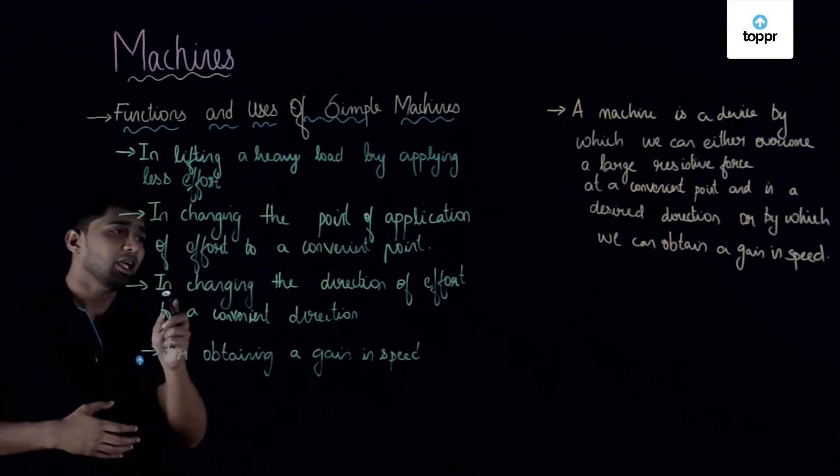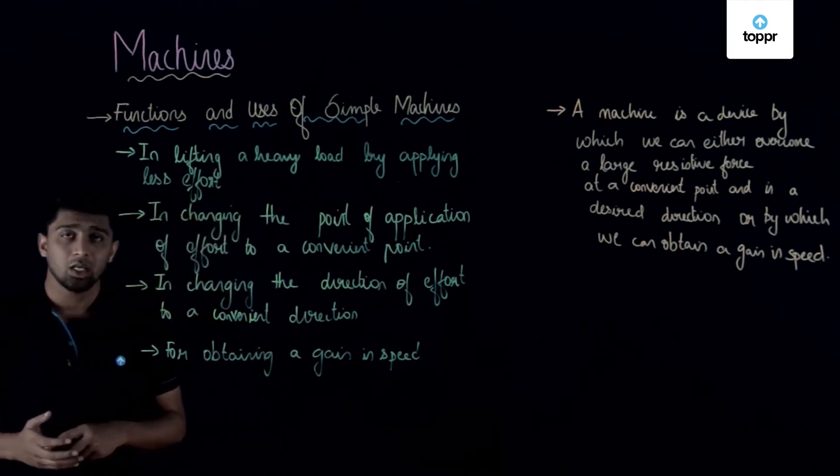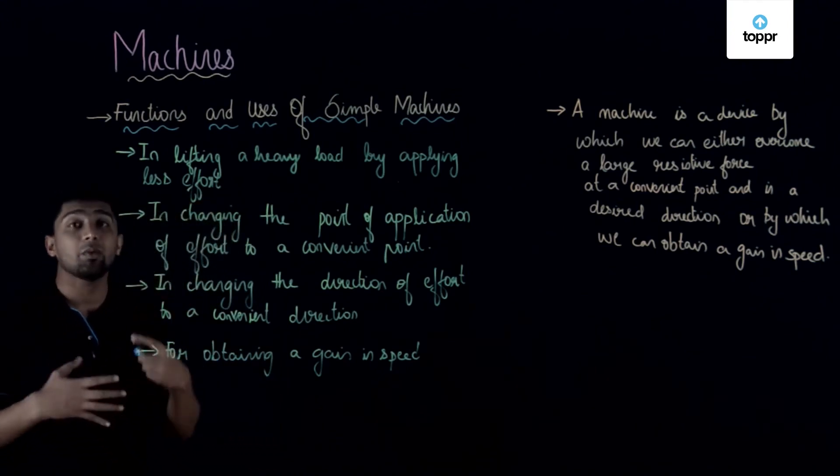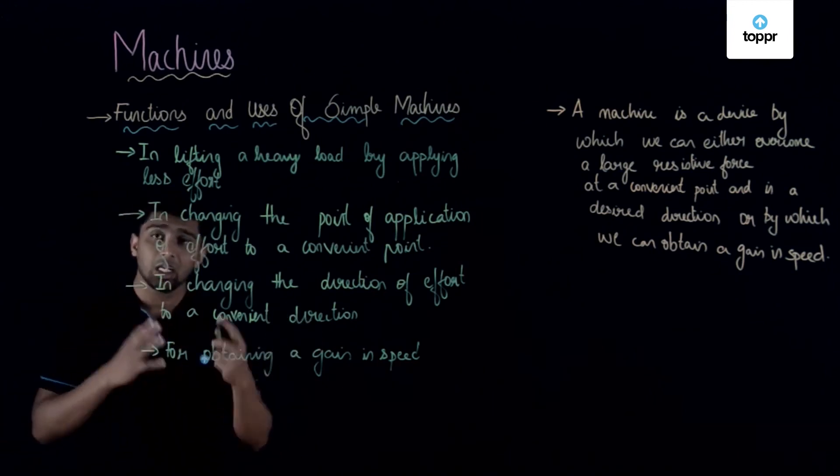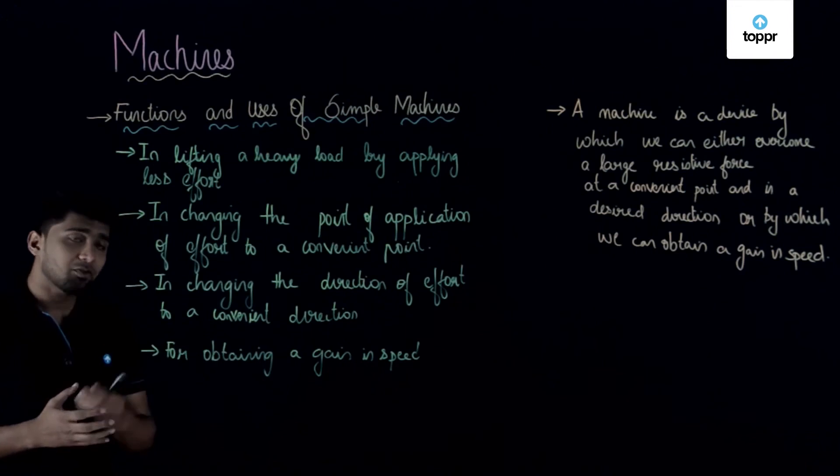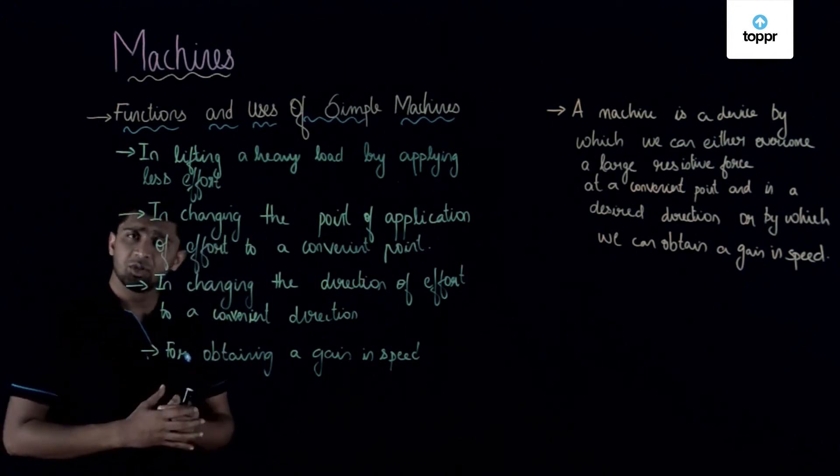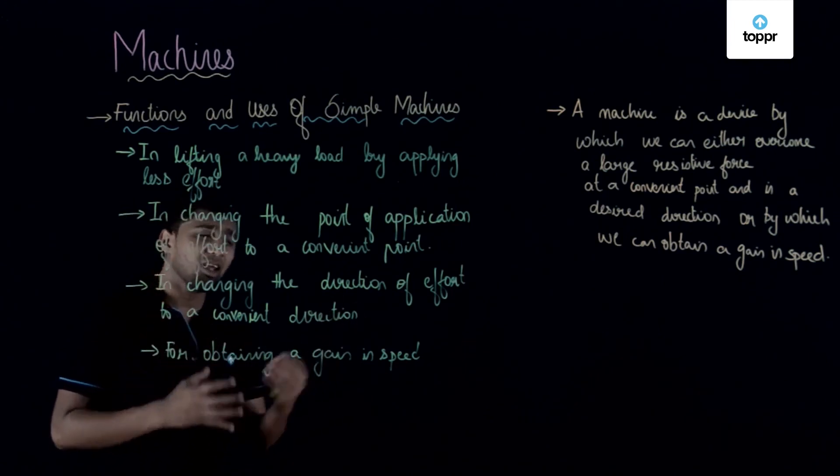Now the third one is in changing the direction of effort to a convenient direction. By making use of simple machine, we will be able to change the direction of effort to a convenient direction. And the last function is we are using machine for obtaining or gain in speed.